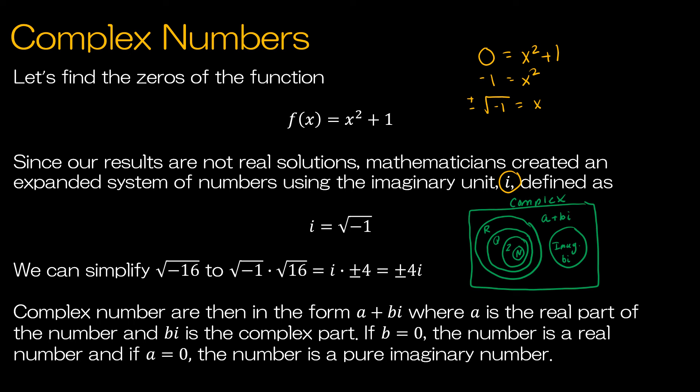Let's make sure we understand how to simplify with imaginary numbers. If I had something like the square root of negative 16, I could simply split that into two factors: negative 1 and 16. The square root of negative 1 is i, the square root of 16 is plus or minus 4, and so my answer is plus or minus 4i.